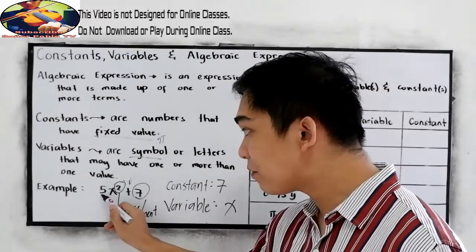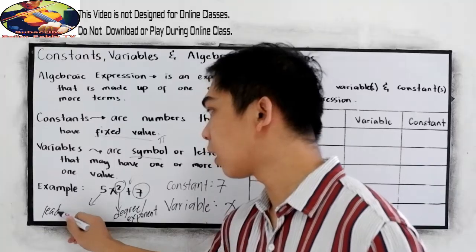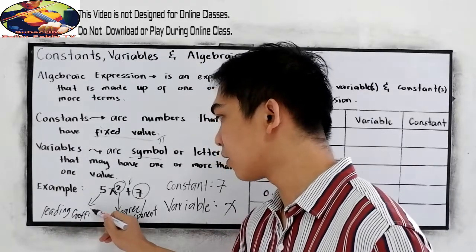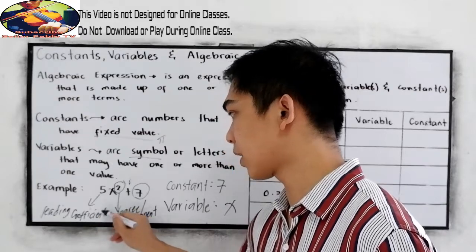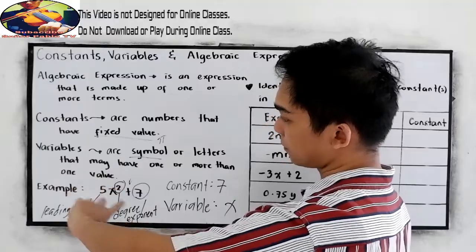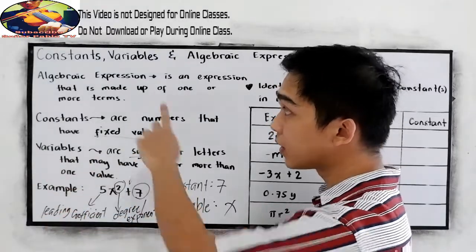And the 5 here is what we call the leading coefficient. When you say leading, it is written on the leftmost part of our expression.